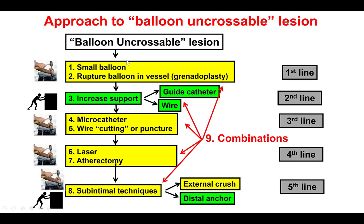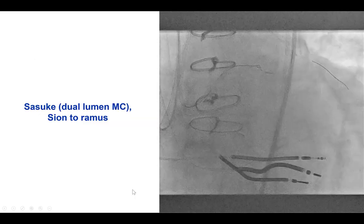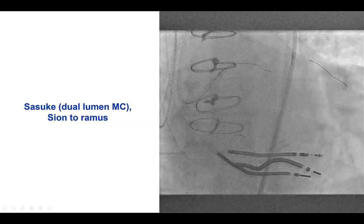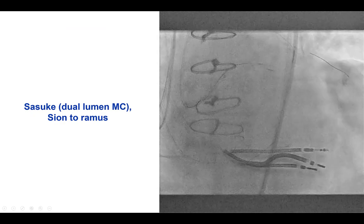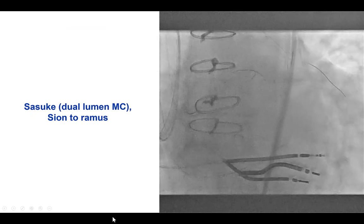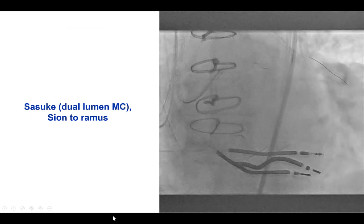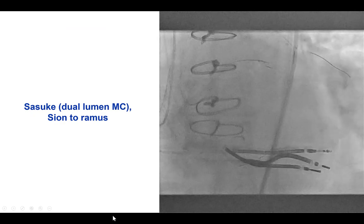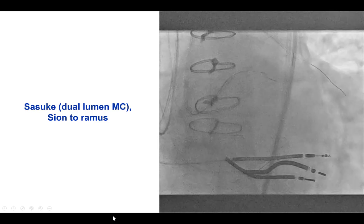How to solve this problem? Usually we start with a small balloon and get more support — for example, with a guide extension. We can use different microcatheters, laser, sometimes atherectomy, or adventitial techniques. In this particular case, we used a Sapphire 1.0 mm balloon, and this successfully dilated the lesion.